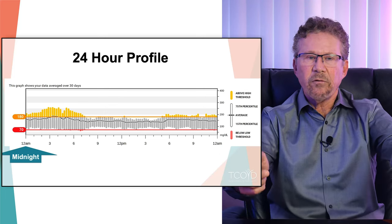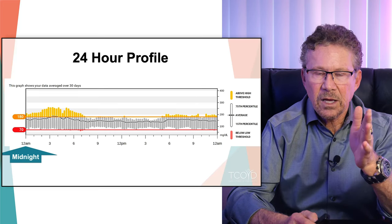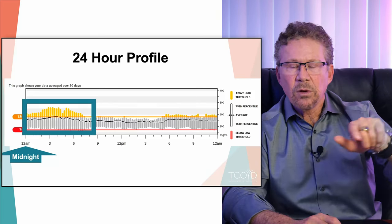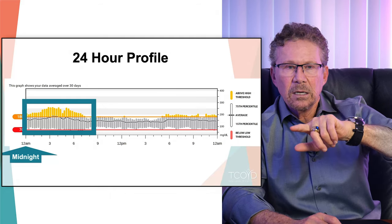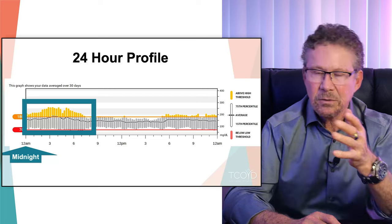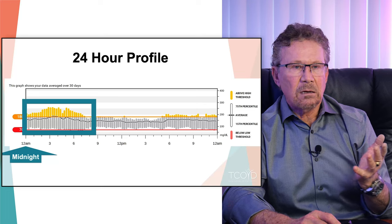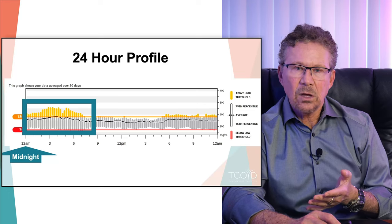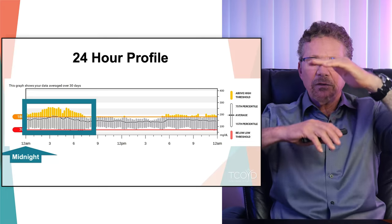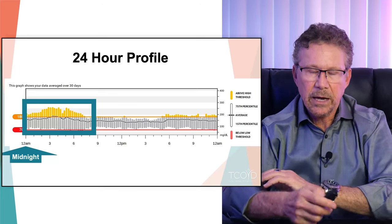Here's his 24-hour profile. It's important to note that 12 midnight is on the left-hand side, and you can see that's where he's really having a lot of variability. Most people when they go to sleep aren't doing too much, but he's young and that's the time of day where he has highs and lows. The rest of the day he's not doing too badly. Remember, you want the height of those rectangles to be narrow.